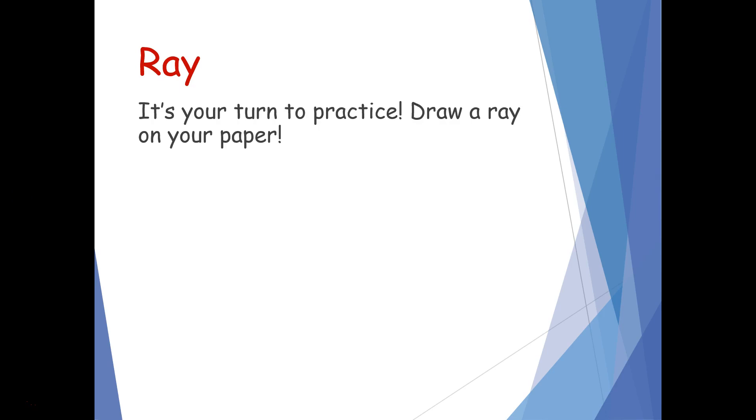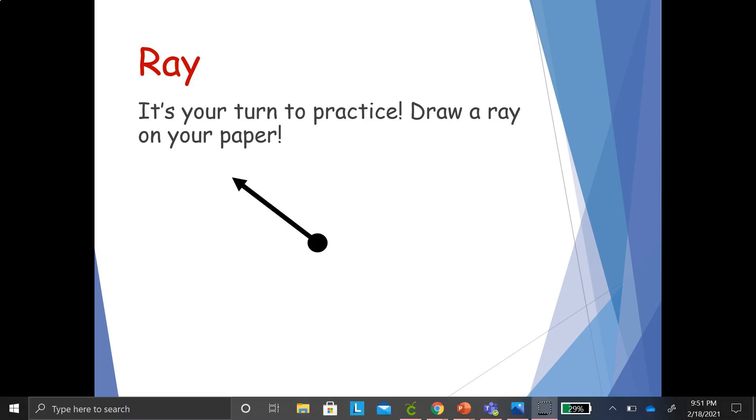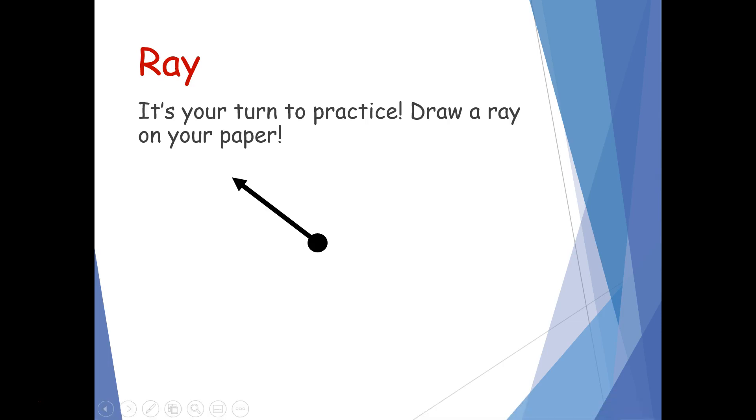Now I want you to open your notebook and practice drawing a ray on your paper. We're going to start with our endpoint. And then we're going to draw a line in any direction, but instead of putting another endpoint at the end of it, like a line segment, we're going to put an arrow. Your arrow can go in any direction and as long as you have an endpoint here and an arrow that shows that you have made a ray.